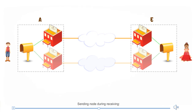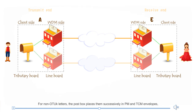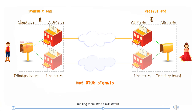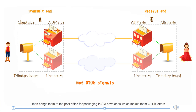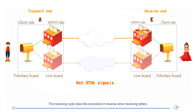For non-OTUK letters, the sender places them successively in PM and TCM envelopes, making them into ODUK letters, then brings them to the post office for packaging in SM envelopes, which makes them OTUK letters. The receiving node does this procedure in reverse when receiving letters.